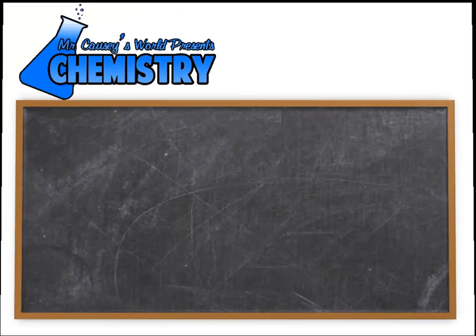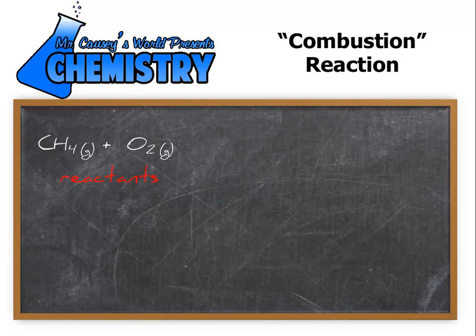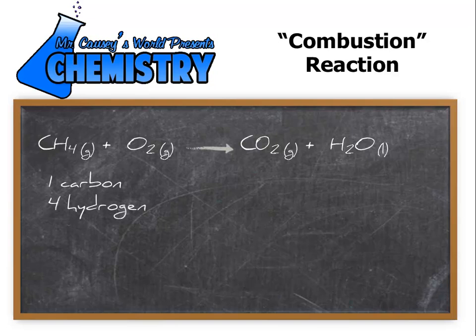So we can go to the magic blackboard and write out the reaction. Here's the reactants: CH4 plus O2 yields carbon dioxide. And since we realize it's going to be excess oxygen, we know it's going to all burn up. Notice now that we have one carbon, four hydrogen, and two oxygen on one side, but only one carbon, two hydrogen, and three oxygen on the other side.